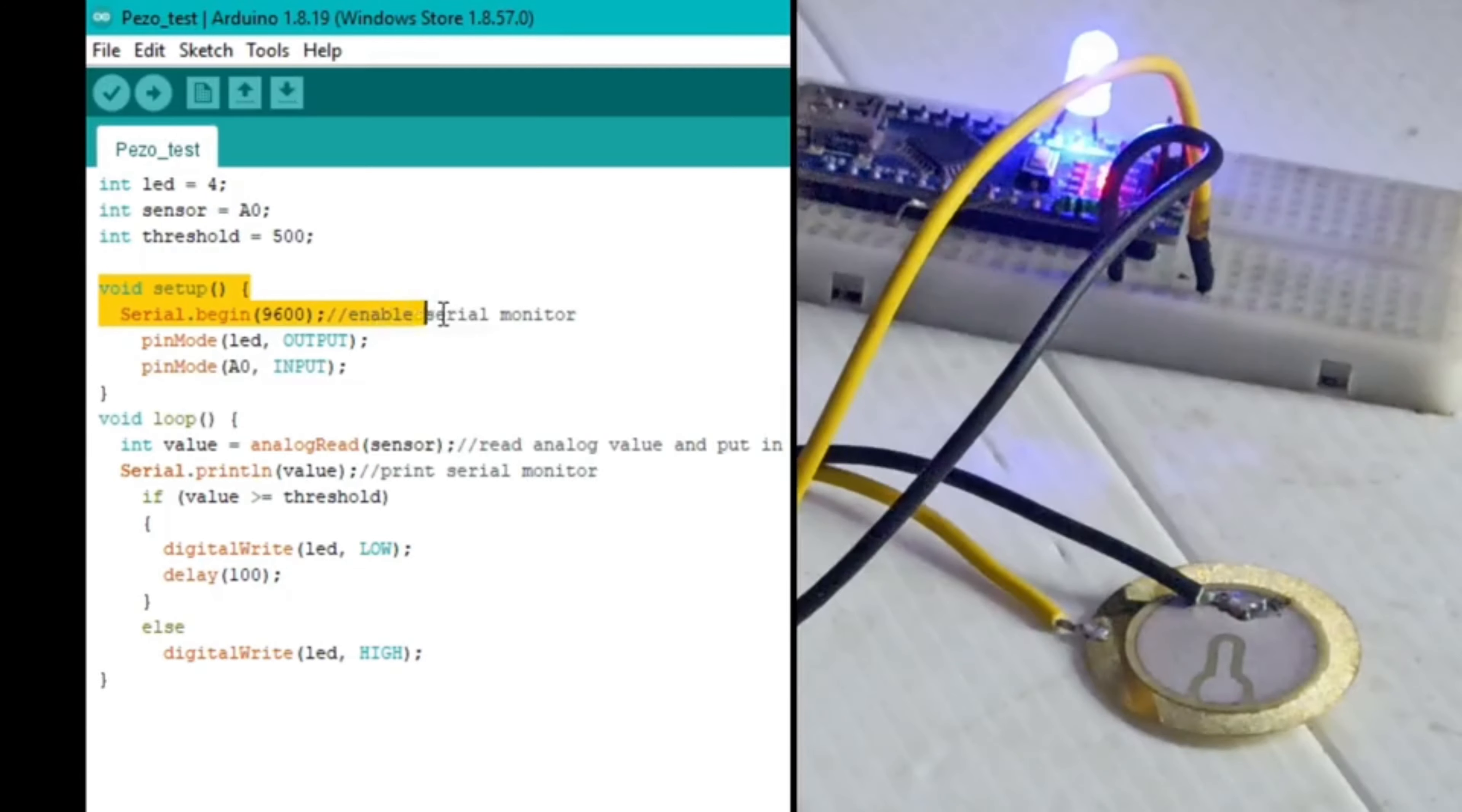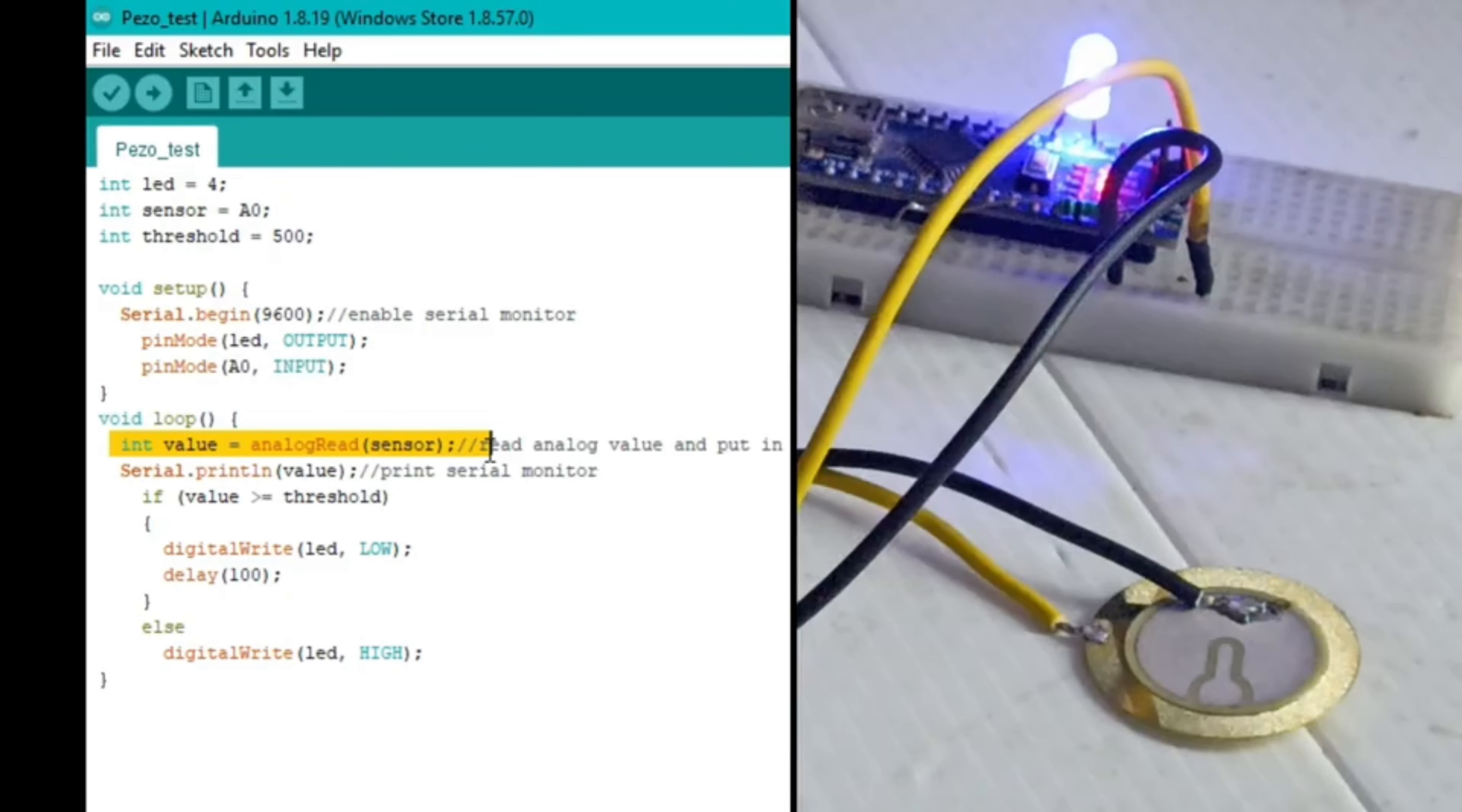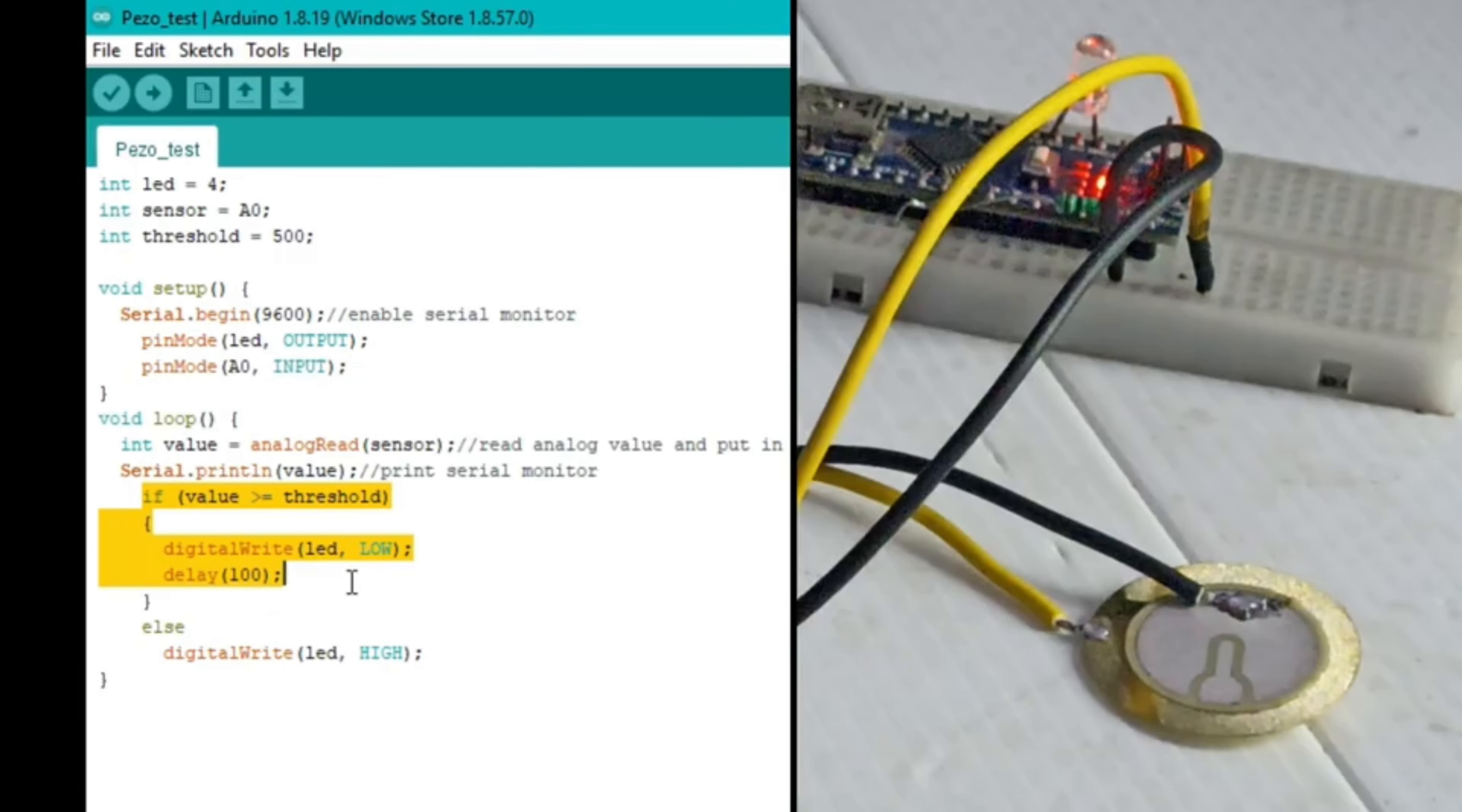Then there is this void setup part where we have declared the serial input and output. Then we have connected these devices and declared as input and output devices. And here in the loop we are reading the analog value. Then we have this if-else loop that will continuously check the value and according to that the LED will glow.